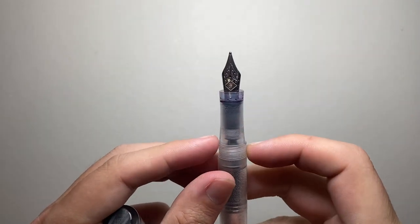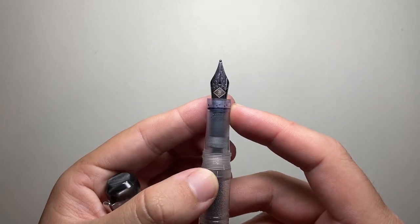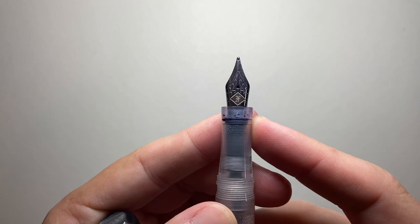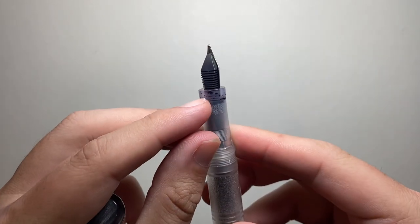The section on this is hourglass. So it tapers down and flares out slightly. Then we get a number six Jovo Franklin Kristoff branded nib. And in this pen, it is recessed into the section there.